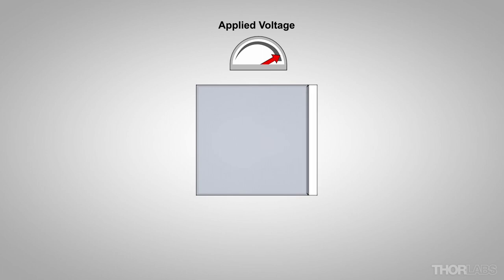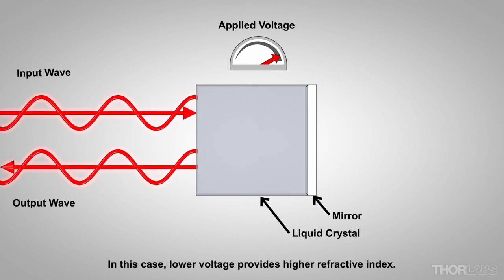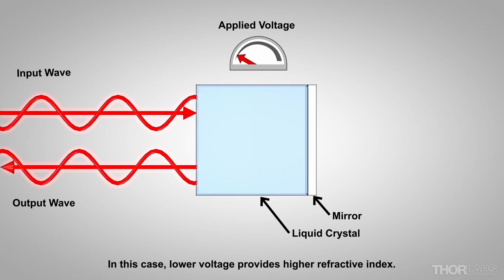As the refractive index increases, it takes longer for the wave to make a round trip through the liquid crystal layer. This increases the phase delay of the output wave.